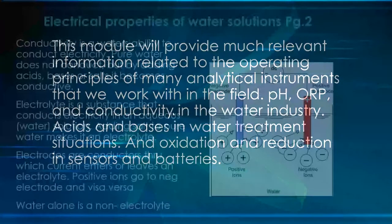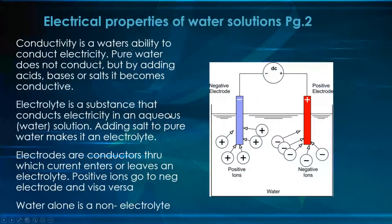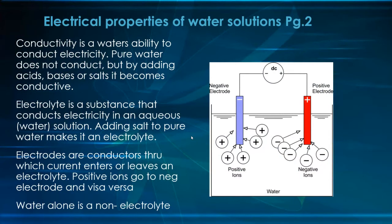We'll start with the electrical properties of water solutions, dealing with conductivity. Conductivity is water's ability to conduct electricity. Pure water is not a very good conductor, but if we add acids, bases, or salts to water, it becomes conductive — most of us have probably done a science experiment with a glass of water, a light bulb, and a battery, using salt water to prove that. When we add acids, bases, or salts, these are all ionic compounds — we're contributing ions, which create the current or voltage for measurement signals.